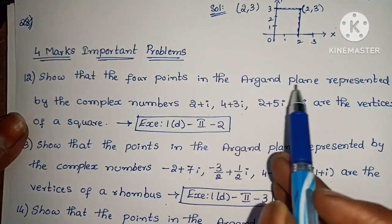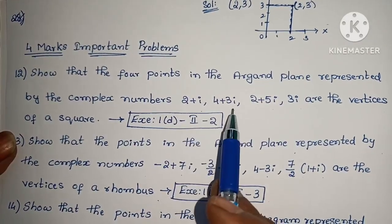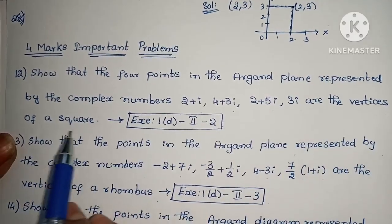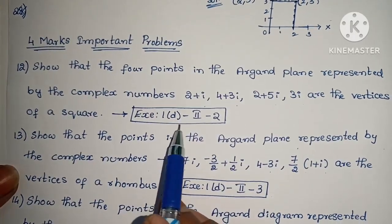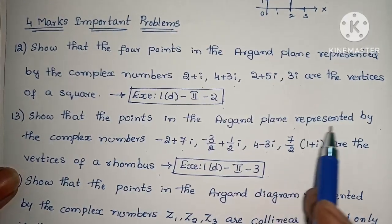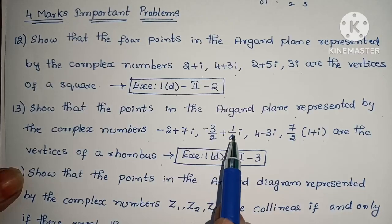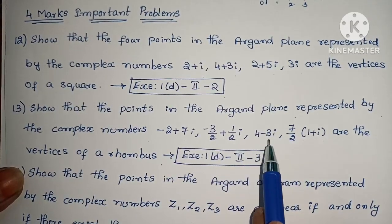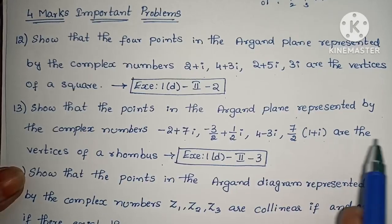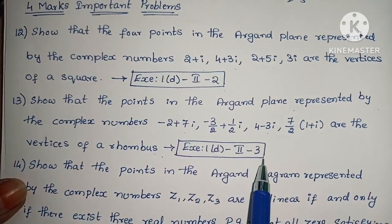Show that the 4 points in the Argand plane represented by the complex numbers 2 + i, 4 + 3i, 2 + 5i, 3i are the vertices of a square. Exercise 1d, second roman, second one. Next, show that the points represented by minus 2 + 7i, (-3/2 + 1/2)i, 4 - 3i, (7/2)(1 + i) are the vertices of a rhombus. Exercise 1d, second roman, third problem.